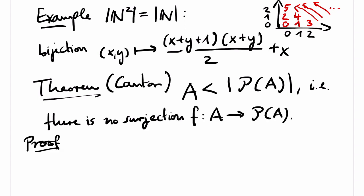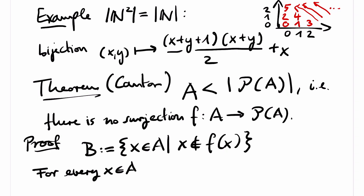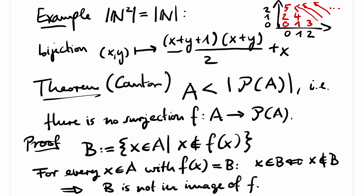The proof is a so-called diagonal argument. We define B as the set of all elements of A, such that x is not an element of f of x. I claim that this set B is not in the image of F. Otherwise, if there exists an element x in A which is mapped to B, then we have that x is in B if and only if, by definition, x is not in f of x, which equals B by assumption. So x is in B if and only if x is not in B. A contradiction. We conclude that indeed B is not in the image of f and f is therefore not surjective.